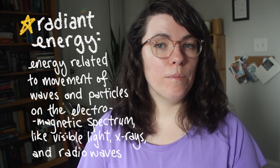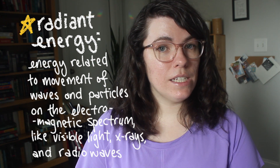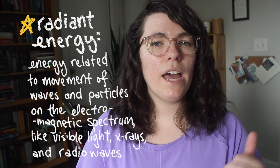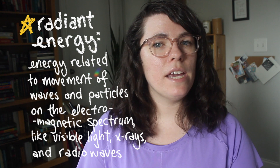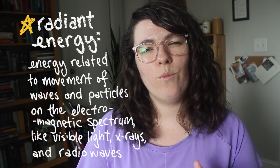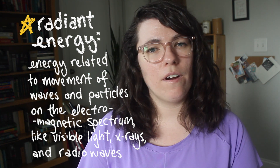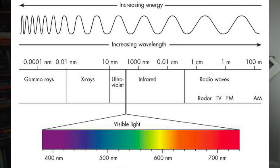Radiant energy has to do with the movement of light, but also with other things like x-rays, gamma rays, and radio waves that we can't see with our eyes. Check out this diagram which shows the electromagnetic spectrum — you can see that visible light is only a very small portion of that spectrum. You might be asked to inspect and answer questions about diagrams like this on the GED test.